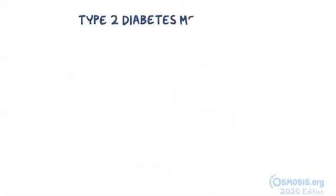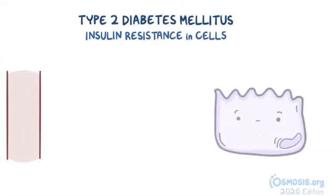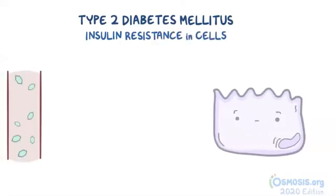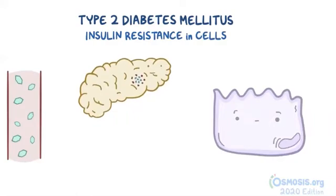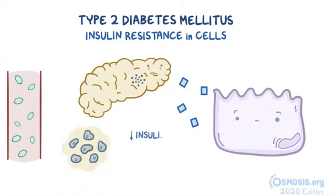Type 2 diabetes is caused by insulin resistance in the cells of the body. When blood glucose rises after a meal, the pancreas produces insulin as a response. Since the peripheral cells are resistant to insulin, they do not take in the glucose, so the pancreas has to produce even more insulin. Eventually, the poor pancreas gets so overworked that the beta cell starts to atrophy, which leads to decreased insulin production and high blood glucose levels.